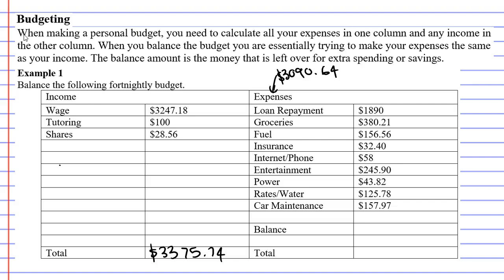Now we want to figure out what the balance is. I'll write this in red so we can distinguish it. We're going to take our income and subtract all of our expenses: $3,375.74 minus $3,090.64, which gives us $285.10. That is our balance.